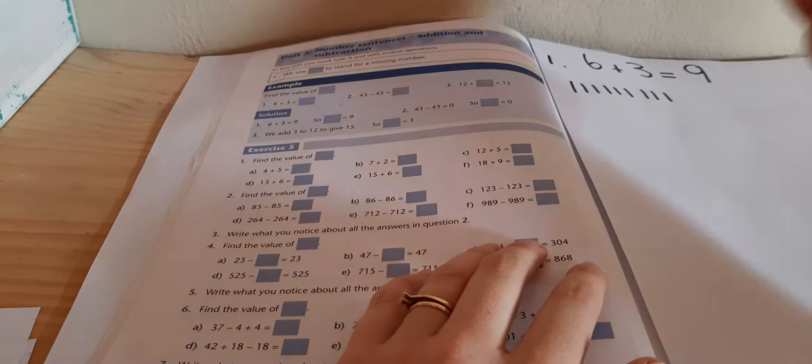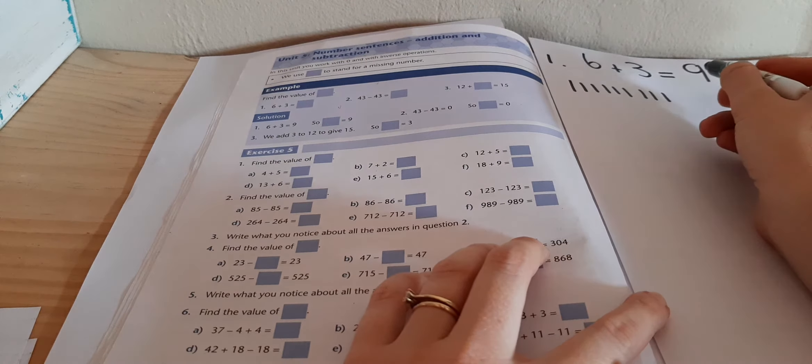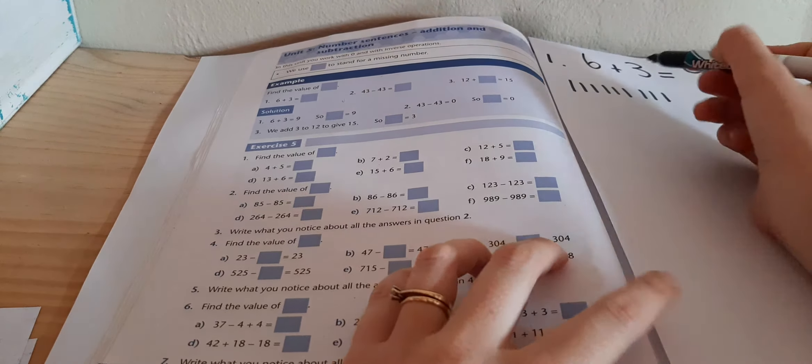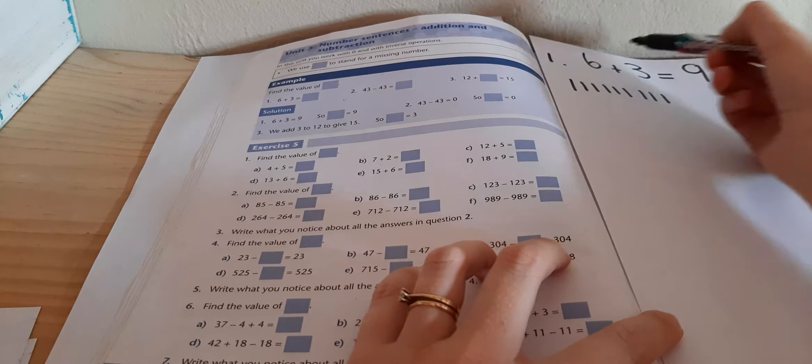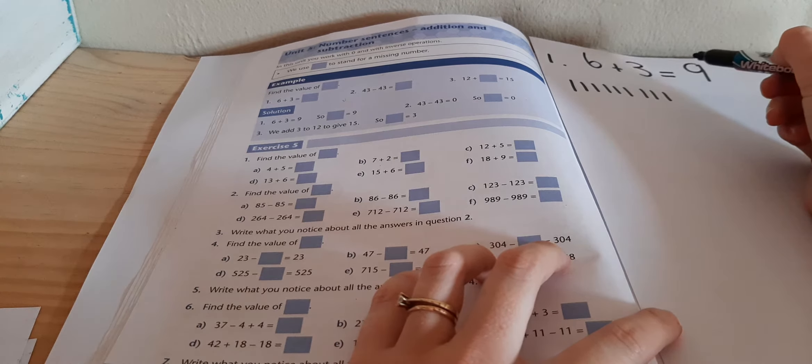So a number sentence is just like the math way of writing numbers down with the question on the left and the answer on the right.